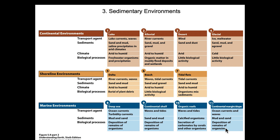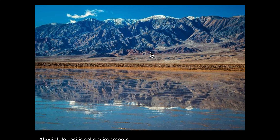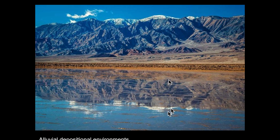Here we have an alluvial depositional environment: mountains being broken down physically, with piles of predominantly feldspars in fan-shaped alluvial fans. In addition to physical movement, chemical dissolution is occurring. If these are dominantly sodium-rich plagioclase feldspars, a lot of sodium ions enter the desert lake, and when the lake dries up, we get halite deposits. In Death Valley, this is called the Devil's Golf Course — a salt deposit that actually creaks, moans, and pops because of extreme daytime temperatures.